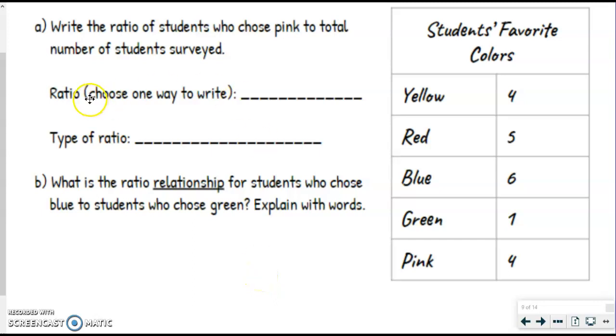So we have ratio. Choose one way to write it. So we don't need to write all three, we just need one, and we want to write the ratio of students who chose pink to total number of students surveyed. So pink, if we look on our chart, would be four. So four should come first. And then total number of students surveyed, we need to add up all of our numbers.